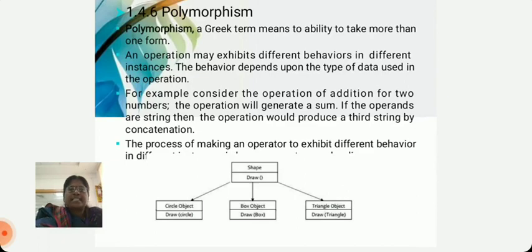Polymorphism. It is a Greek term. It means ability to take more than one form. Polymorphism means many forms. An operation may exhibit different behavior in different instances. The behavior depends upon the type of data used in the operation. For example,